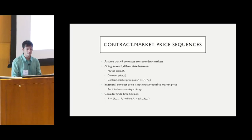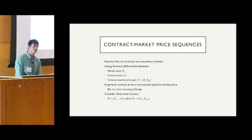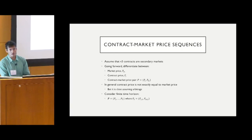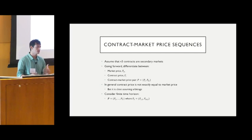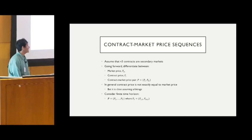Before delving into the strategies, I want to discuss the environment in which they operate. We assume the V3 contracts are secondary markets, and hence we differentiate between the market price — external prices, say Binance — and the spot price of the contract, P_C. These won't in general be equal, but arbitrage will keep them close. We consider a finite time horizon of these pairs of prices going forward.